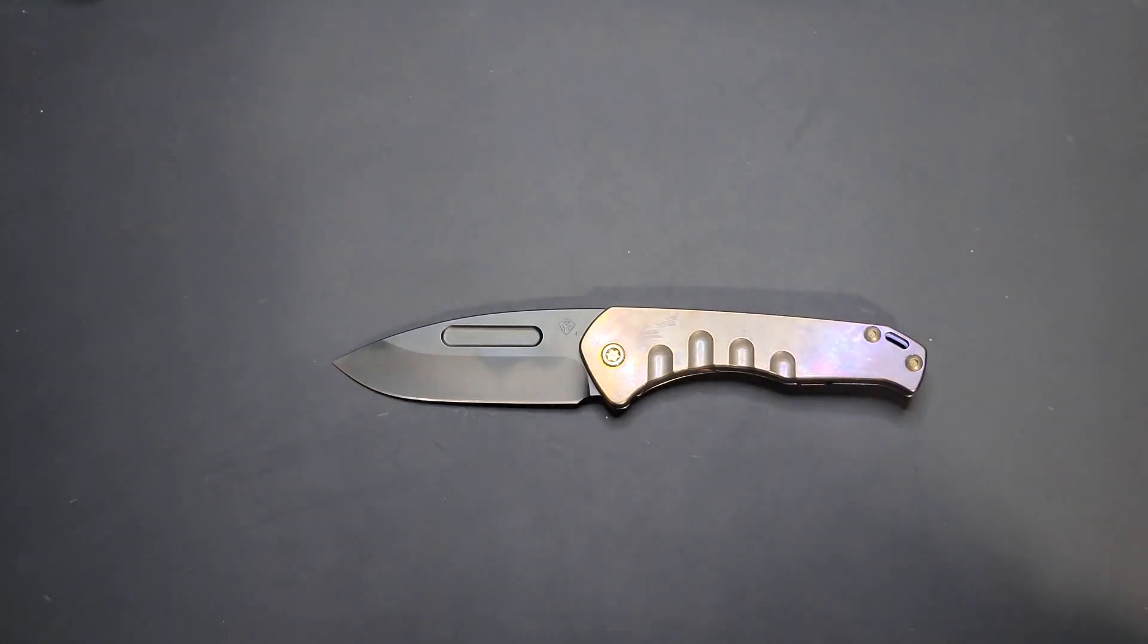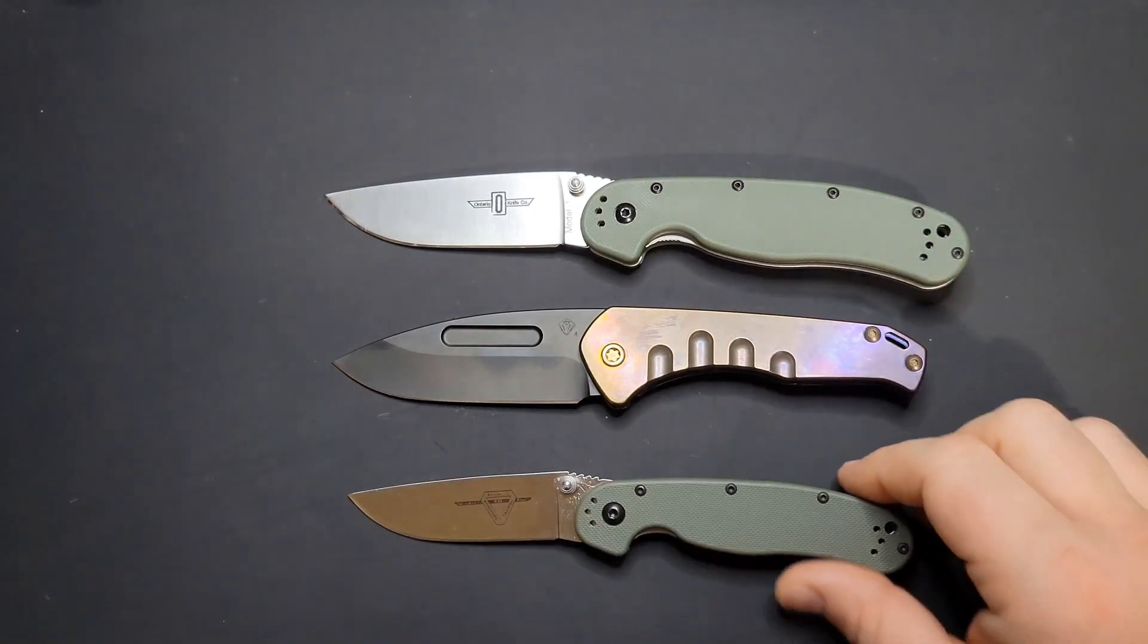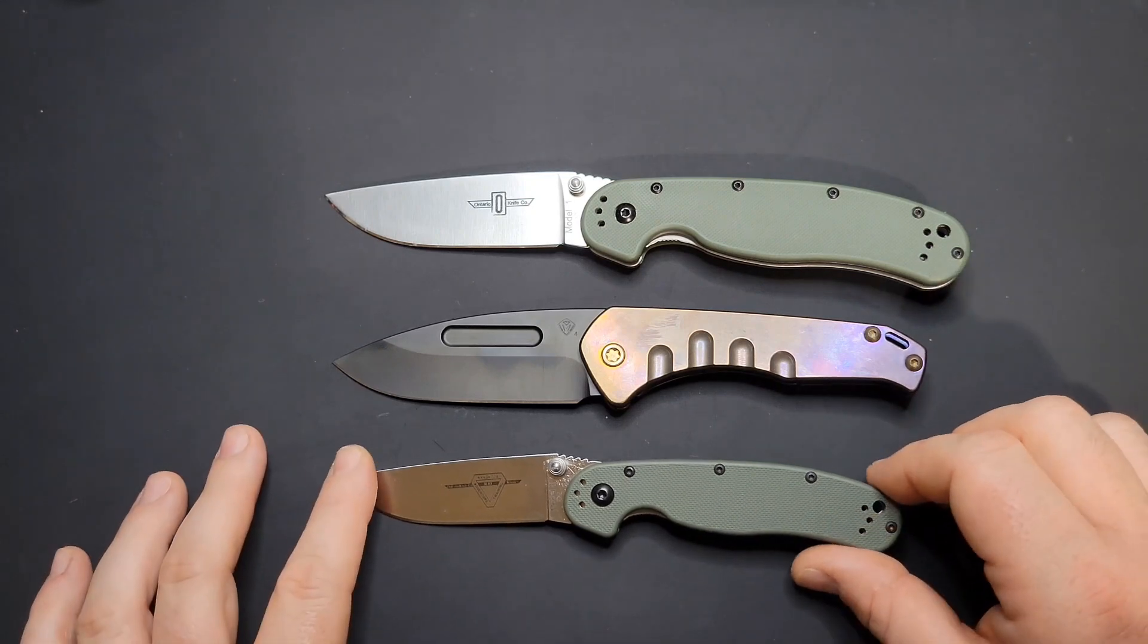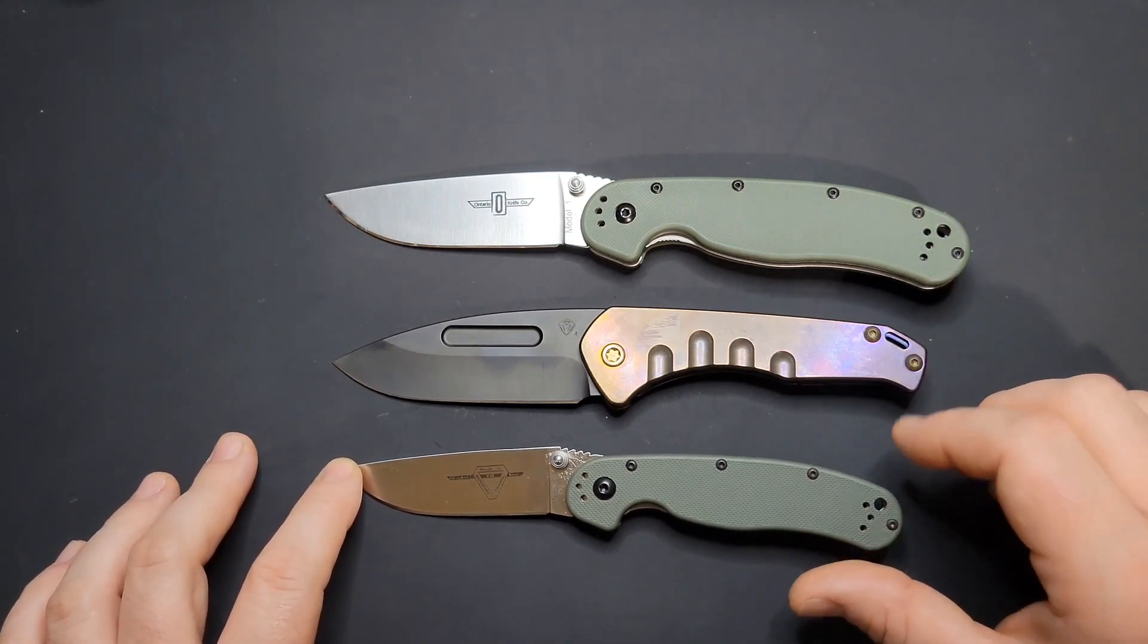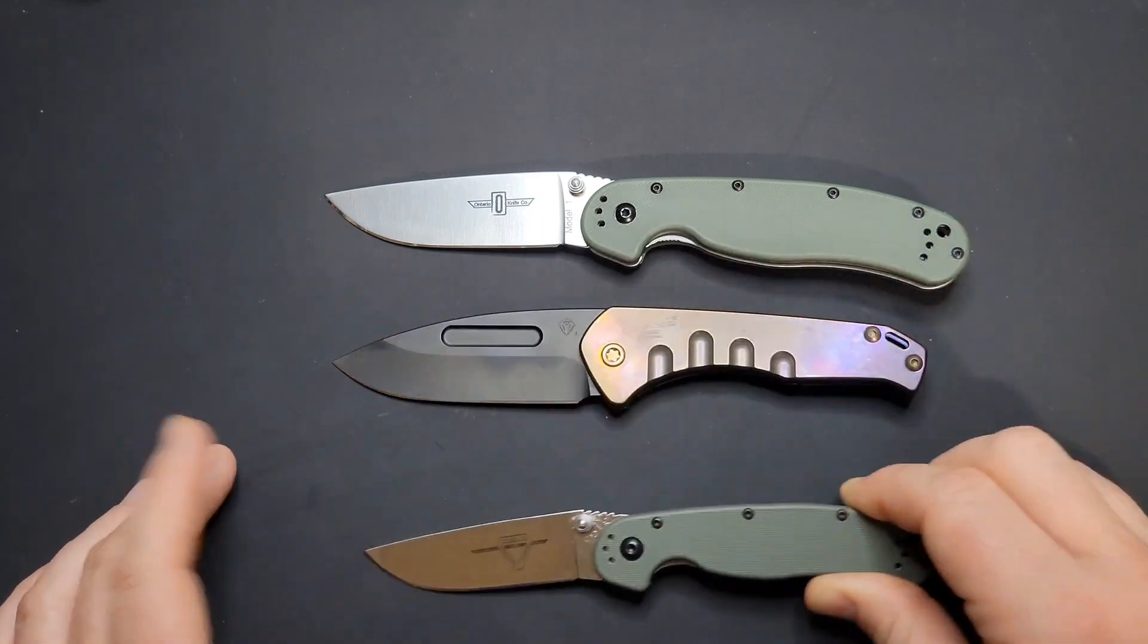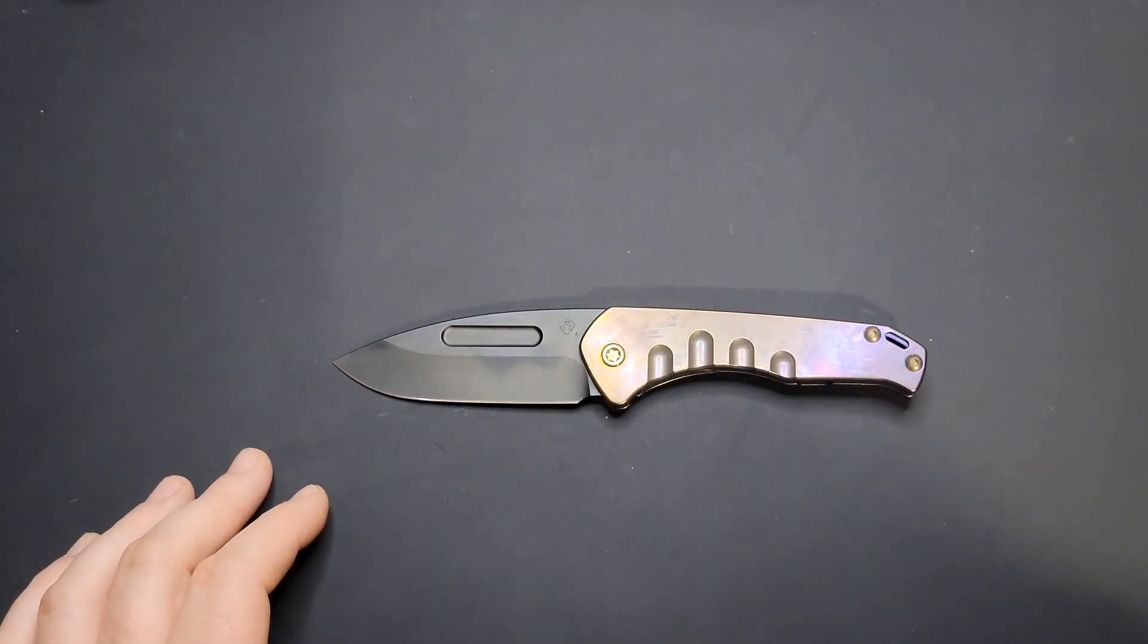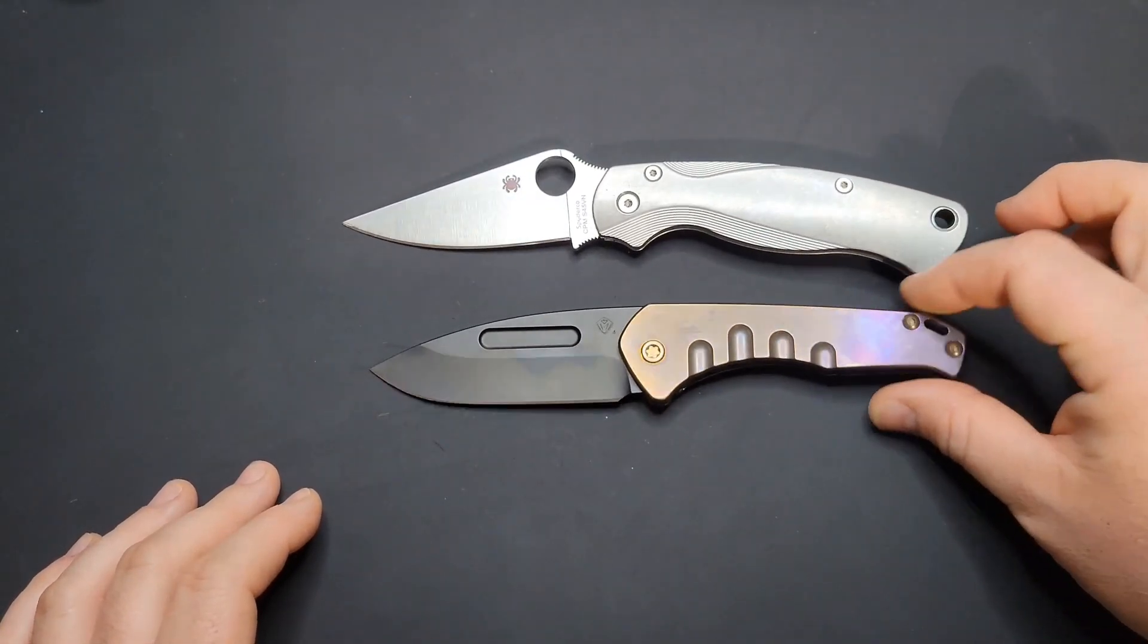So it definitely utilizes every inch of blade that it's got there. That's the Ontario RAT Model One, Ontario RAT Model Two. You can see the same pattern right there, closer in overall size I'd say to the RAT Two, but as far as cutting edge goes, definitely got the RAT Two beat.